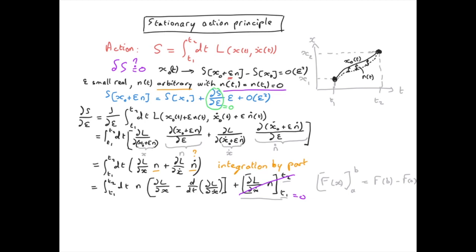Now, looking at the first term, we see that it's a product of the arbitrary function η with what is between the bracket. But because η is arbitrary, we can choose it not to be zero. Therefore, if we want the first derivative of S according to ε to be zero, the only possibility is for what is between the bracket to be zero.